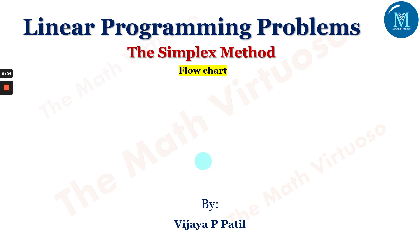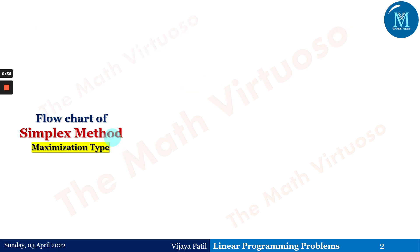Hello and namaste. In continuation with the linear programming problems, after the detailed discussion on the different terminologies, we'll be using the simplex method. We are going ahead with the flowchart of this particular simplex method. Under the flowchart, we are discussing two types: the maximization type of the objective function and the minimization of the objective function, and then we'll combine both flowcharts into one.